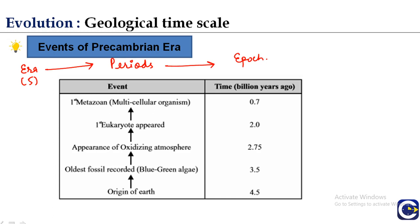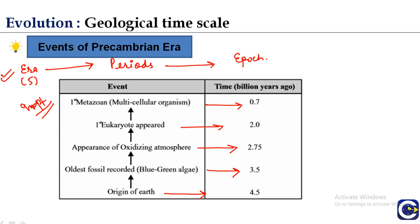Now there are some important milestones of the Pre-Cambrian era — that is, the Archaeozoic and Proterozoic eras. These are very important and should be on your fingertips: origin of life 4.5 billion years ago; oldest fossil recorded (blue-green algae) 3.5 billion years ago; appearance of oxidizing atmosphere 2.75 billion years ago; first eukaryote appeared 2 billion years ago; and first multicellular organism (first metazoan) appeared 0.7 billion years ago.